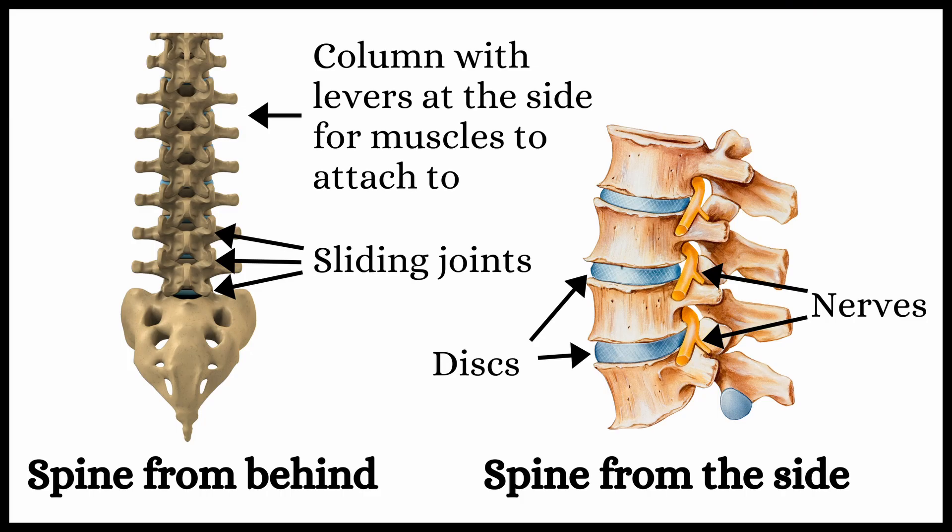Now let's look at the problems abnormal function causes. First, some basic spinal anatomy. The vertebrae are stacked on top of each other. Between the vertebrae at the front are discs, which are flexible pads, and at the back are sliding joints that help guide movement. The levers at the side are for muscles to attach to and help move the vertebrae. And lastly, nerves come out of the holes at the side.